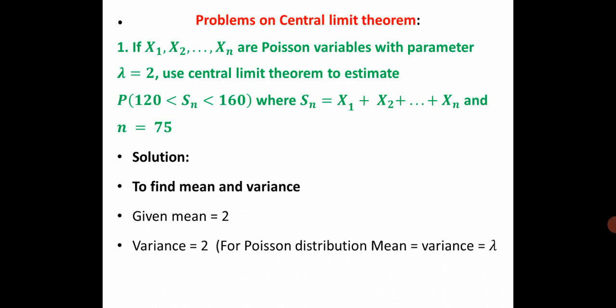Let us see the problem based on Central Limit Theorem. Question: if x1, x2, ... xn are Poisson variables with parameter lambda equal to 2, use the Central Limit Theorem to estimate the probability of 120 less than Sn less than 160, where Sn equals x1 plus x2 plus ... xn, and n equals 75.